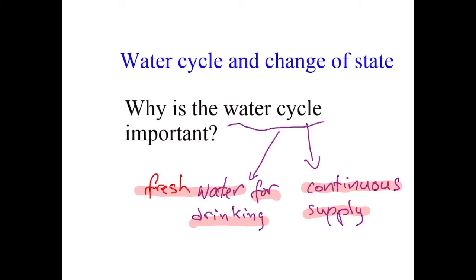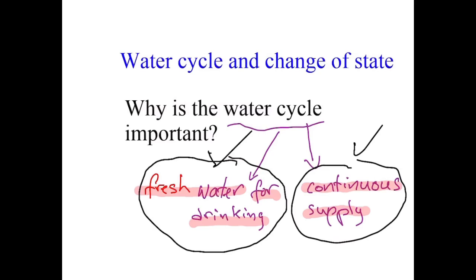Why is the water cycle important? Basically, the water cycle provides us with a continuous supply of fresh water for drinking. If the water is not fresh, it is not fit for drinking and a lot of organisms will die. The concept phrase that is very important to answer this question is the continuous supply of fresh water. You have to write these concept words here to answer this question.